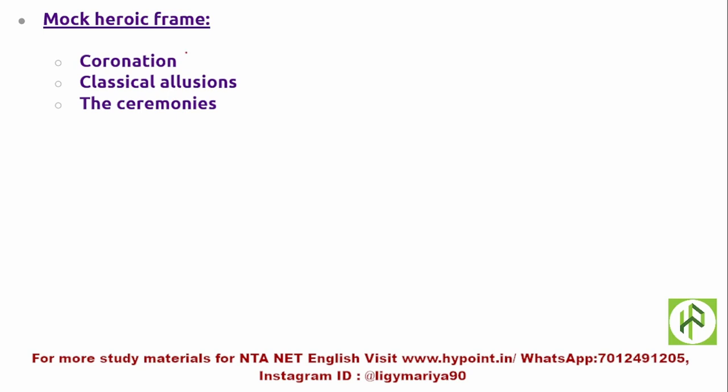The mock heroic frame in the poem includes: coronation ceremonies as typically found in epic works, classical allusions to Arion, Augustus, and Ascanius, the choosing of a proper heir by Flecknoe, the flying of twelve owls, kingly apparel, and Flecknoe anointing his son — all these ceremonies are presented in a heroic manner, creating the mock heroic effect that defines this brilliant work by Dryden.